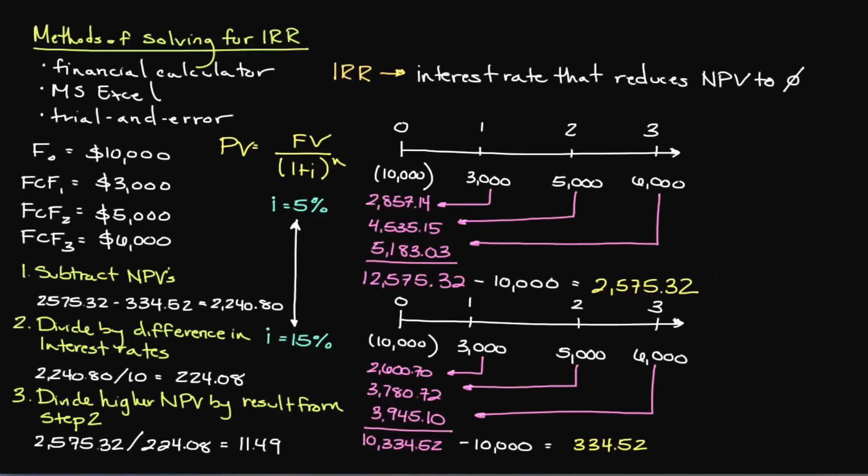In our fourth and final step, we add the 11.49% to our lowest interest rate of 5%, which gives us $16.49%. This is our IRR, or at least close to it. If you were to use a financial calculator, you would probably get something like $16.79, with the difference being that the calculator doesn't round, and of course, I did.